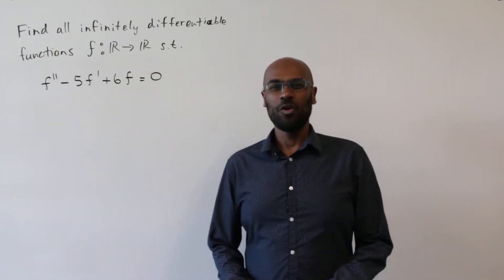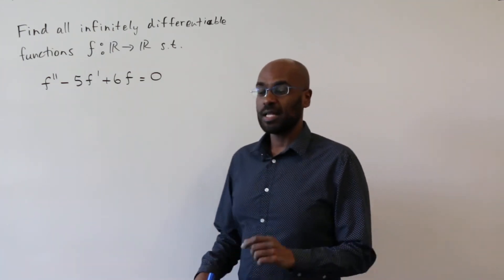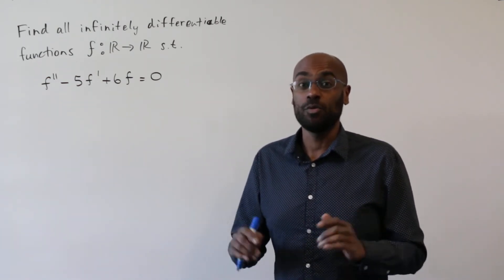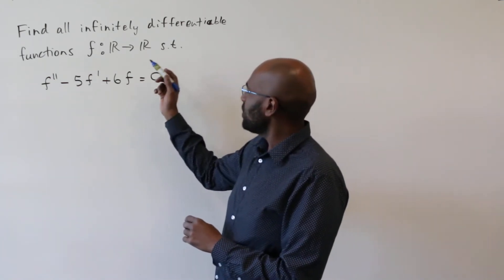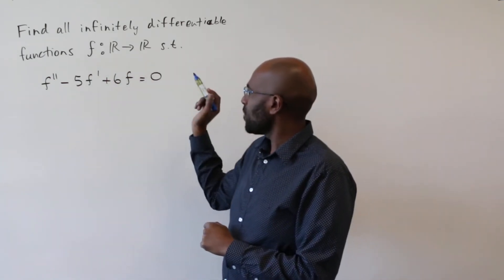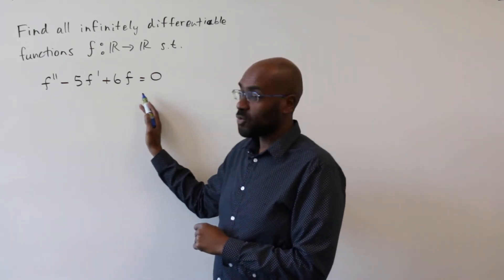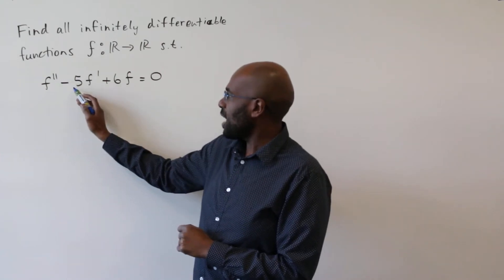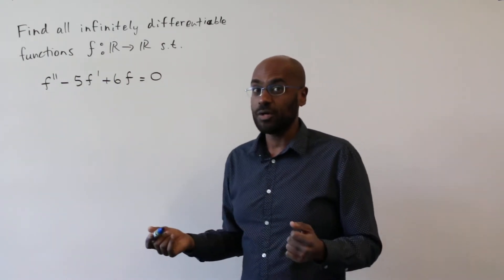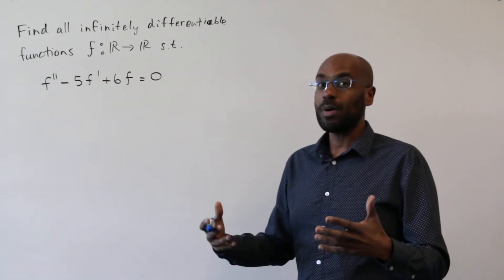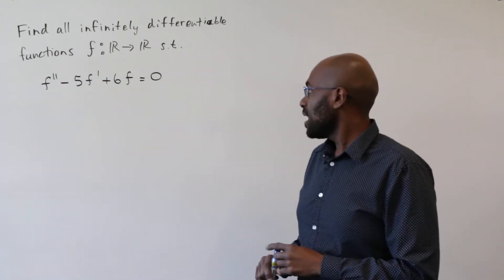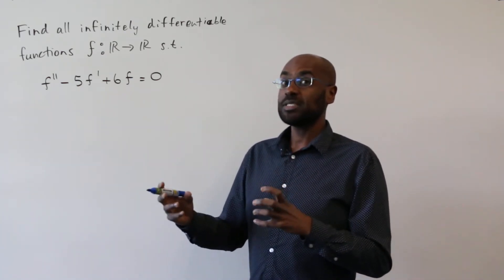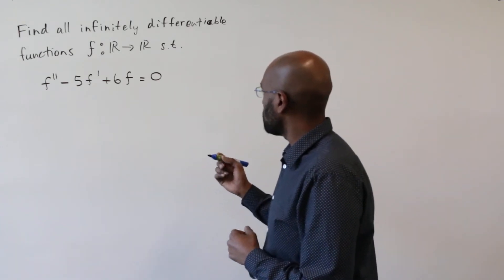Hey, welcome to today's video. I'm Prof Omar, and today we're going to revisit a classical problem from undergraduate mathematics, but look at it from a completely different perspective than what we're used to. The question is to find all infinitely differentiable functions f from the reals to the reals that satisfy this second degree homogeneous linear differential equation, namely f double prime minus 5f prime plus 6f equals zero. Now there are typical ways to go about this, but I want to think about how to do this without those tools, bringing in linear algebra as a way to approach this problem.